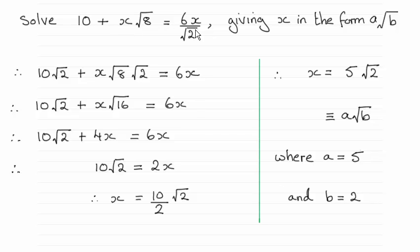I've taken the equation here and decided to multiply by √2 to each of the three terms, just so I can get rid of it from the denominator. So we get 10√2, and then we've got x√8 times √2 equals 6x.